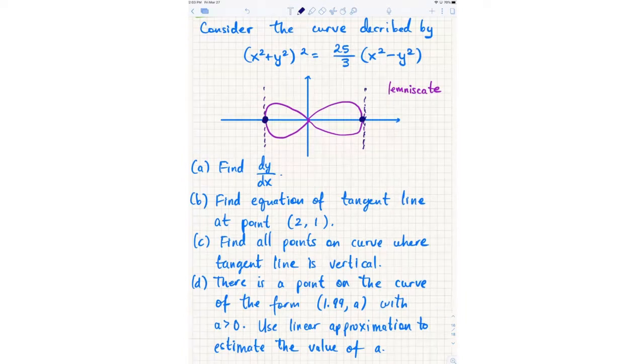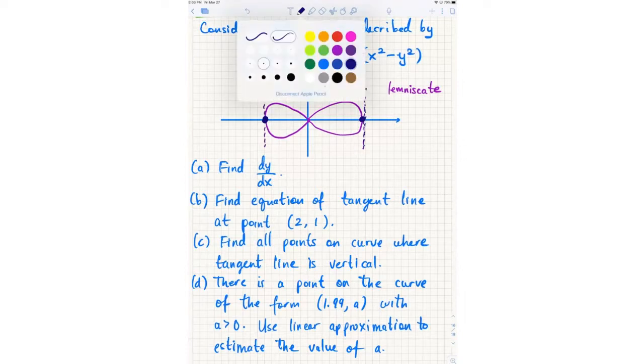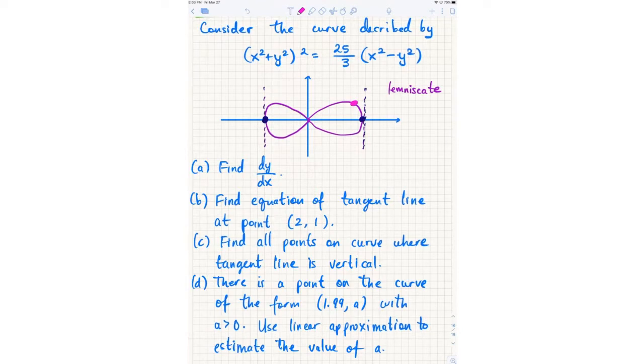And then part D: there is a point on the curve of the form (1.99, a) with a greater than 0. That's like some point over here, like this pink point over here, 1.99 comma some y value. I don't know what that y value is. However, we're going to use linear approximation to estimate the value of that y coordinate of the pink point.